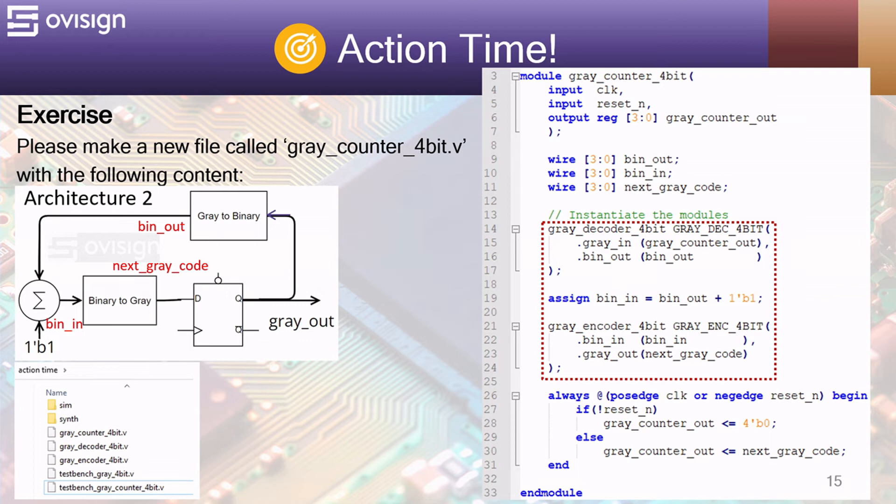At line 26 we have a simple register active on posedge clock with asynchronous reset_N. The register simply stores the next gray code value in gray_counter_out at each posedge clock. Voila! Our design is finished! Isn't this so easy?